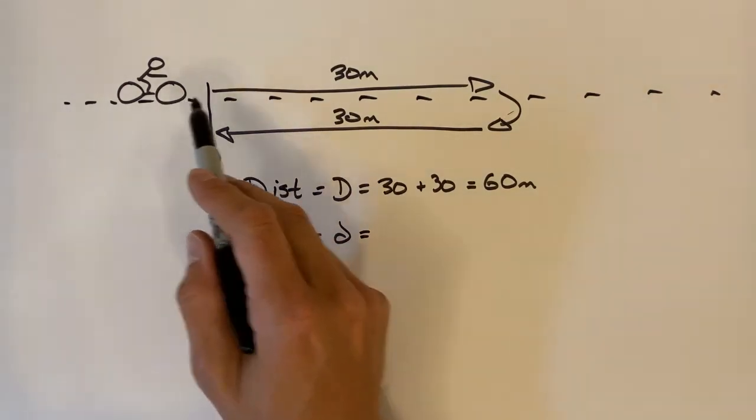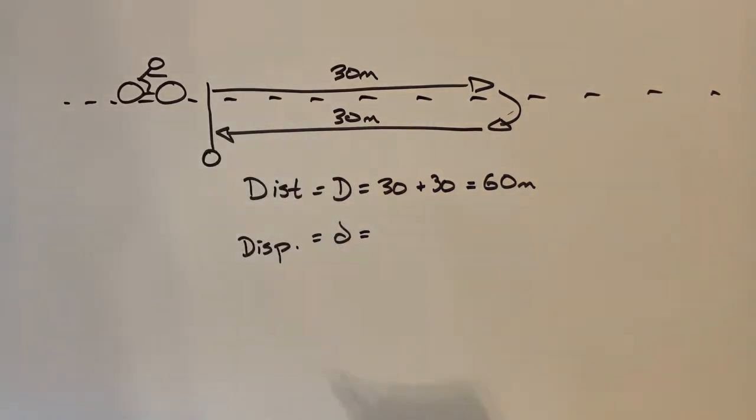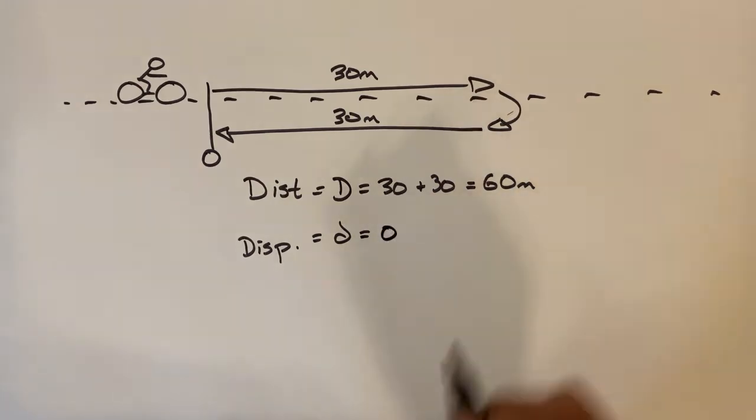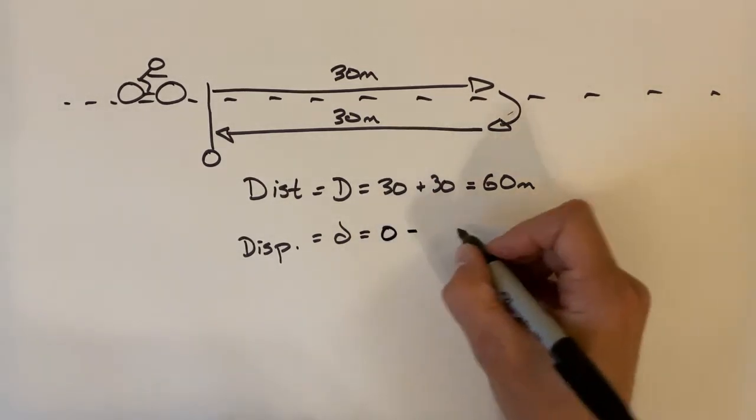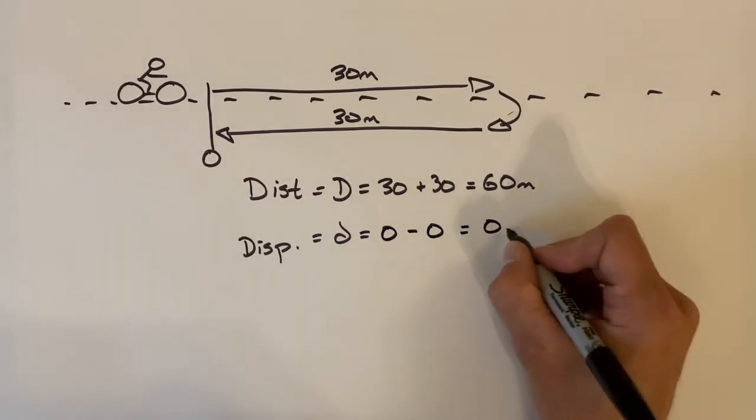So this ATV is going to start at a position of zero, go over here, come back, and end at a position of zero. What that means is our final position is zero and our initial position is zero. So final minus initial, our change in position is zero meters.